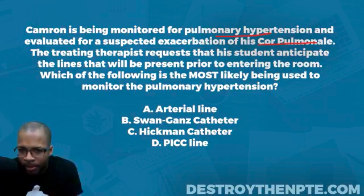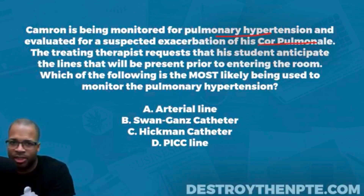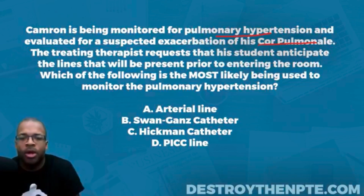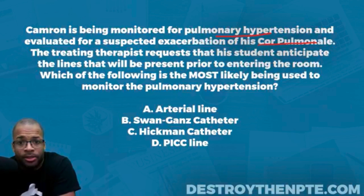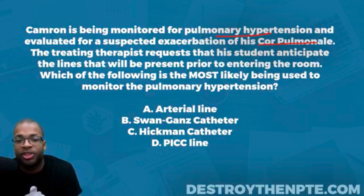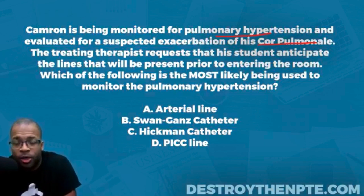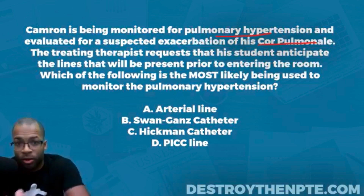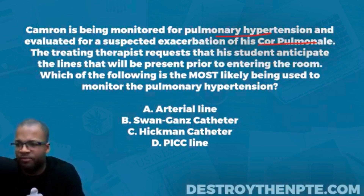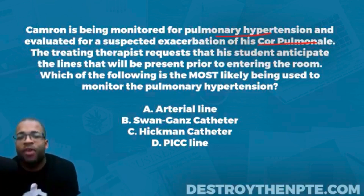First of all, pulmonary hypertension is not systemic hypertension. There is a difference between the two. Systemic hypertension refers to the force of blood flow on the walls of the peripheral arteries — the arteries leaving the heart going out toward the periphery. Pulmonary hypertension is related to the pressure on the walls of the pulmonary arteries, which carry blood from the right ventricle toward the lung tissue.